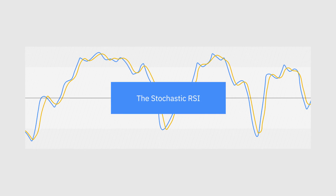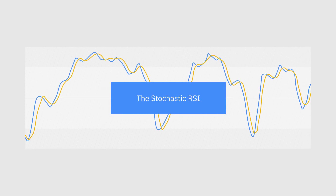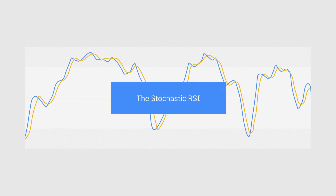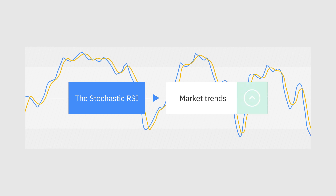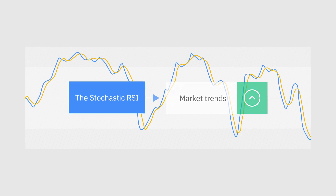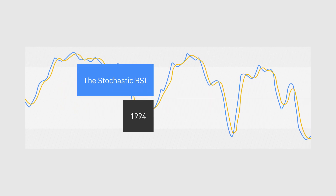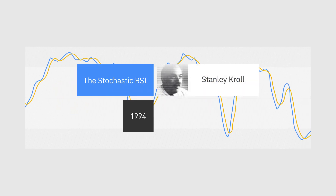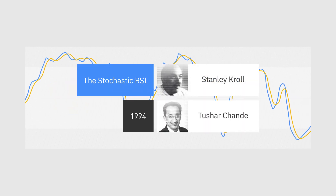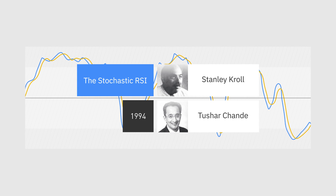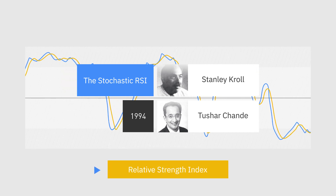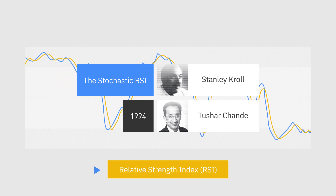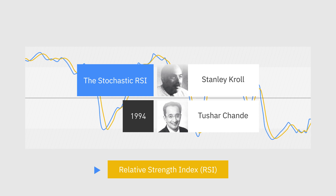The Stochastic RSI is a technical analysis indicator used to identify market trends. It was created in 1994 by Stanley Kroll and Tushar Shonda with the goal of increasing the sensitivity of the regular Relative Strength Index, or RSI indicator.